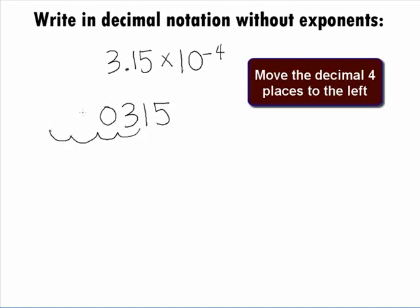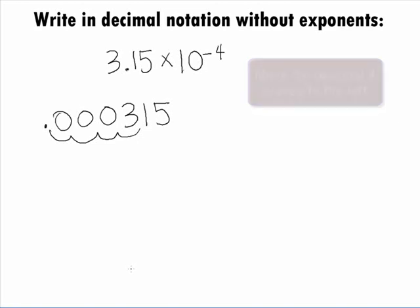When we do this, we want to pad any missing place values with zeros. So, our final answer is .000315.